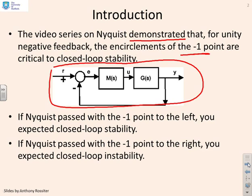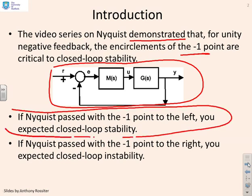We gave you the criteria, but more importantly, what we observed was that if the Nyquist diagram passed the minus one point with the minus one point on the left, then you tended to get closed-loop stability. However, if the Nyquist diagram passed the minus one point with the minus one point on the right, you expected closed-loop instability.